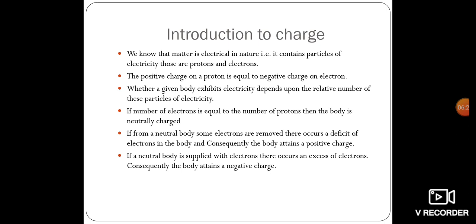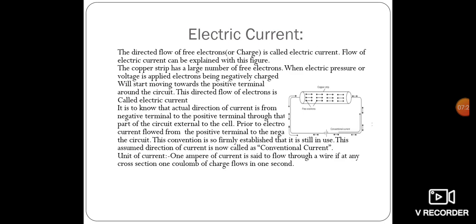If from a neutral body some electrons are removed, there occurs a deficit of electrons and consequently the body attains a positive charge. If we have fewer electrons compared to protons in an atom, the positive charge increases and the net charge becomes positive. If a neutral body is supplied with electrons, there occurs an excess of electrons and consequently the body attains a negative charge.